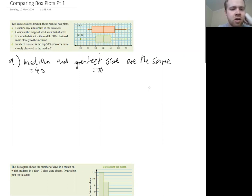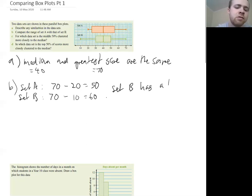Compare the range of set A with that of set B. So to compare, the best way to compare is to find the range for each of them and then note the differences. So to find the range, we just do the highest minus the lowest. So for set A, it's going to be 70 minus 20, which equals 50. And then for set B, it's going to be 70 as well, but we're going to minus 10, which equals 60. So then we can say that set B has a larger range of scores.